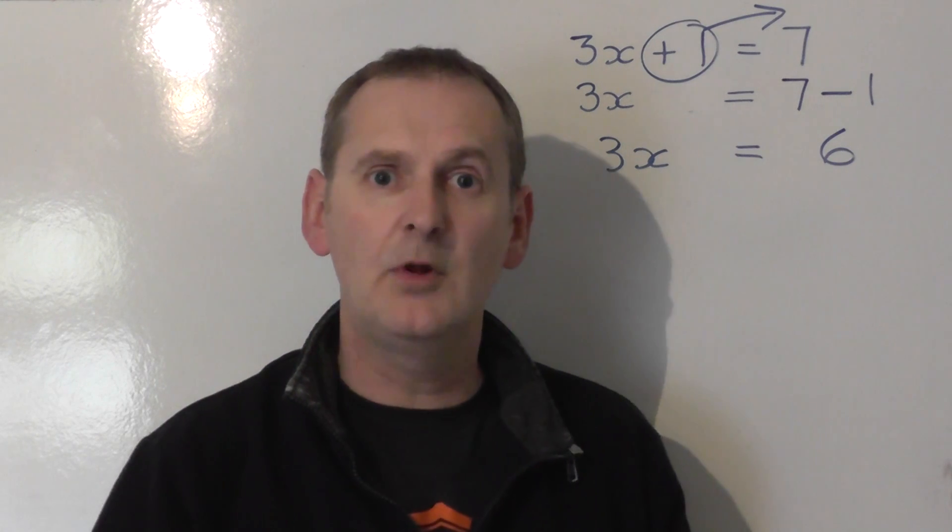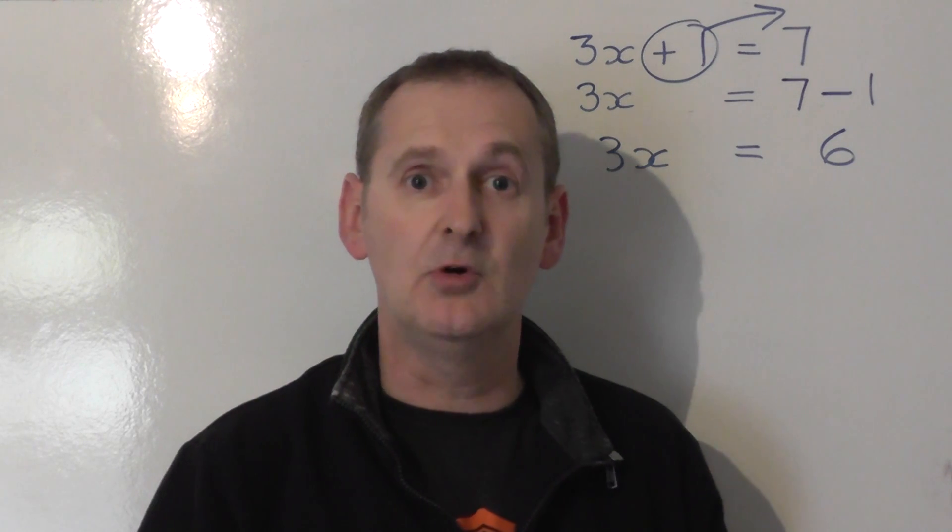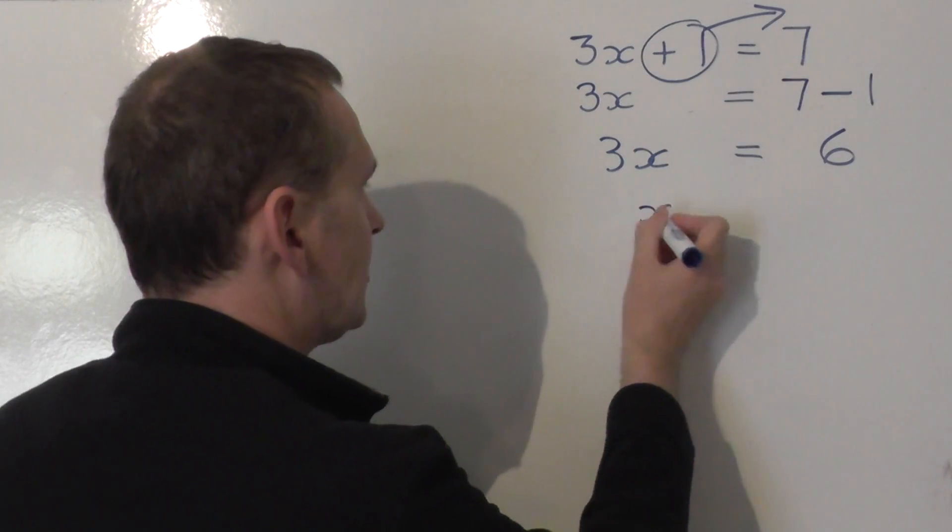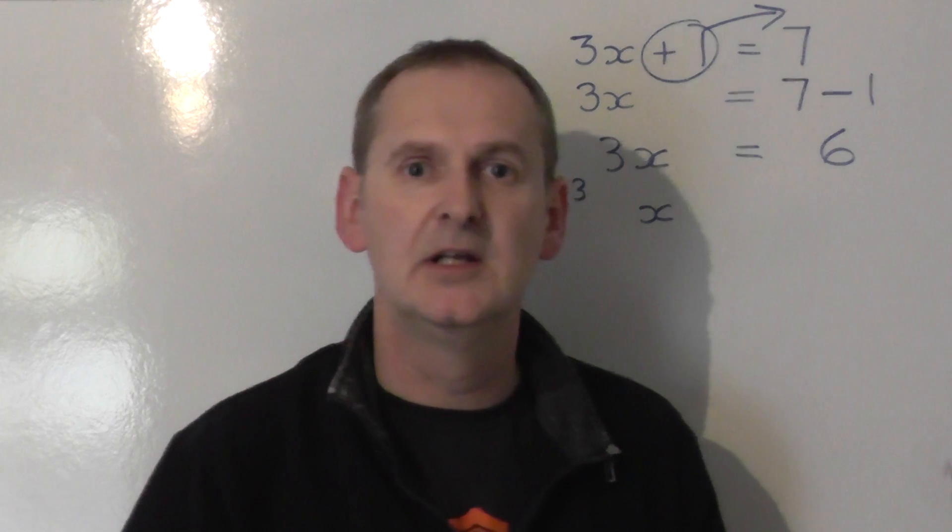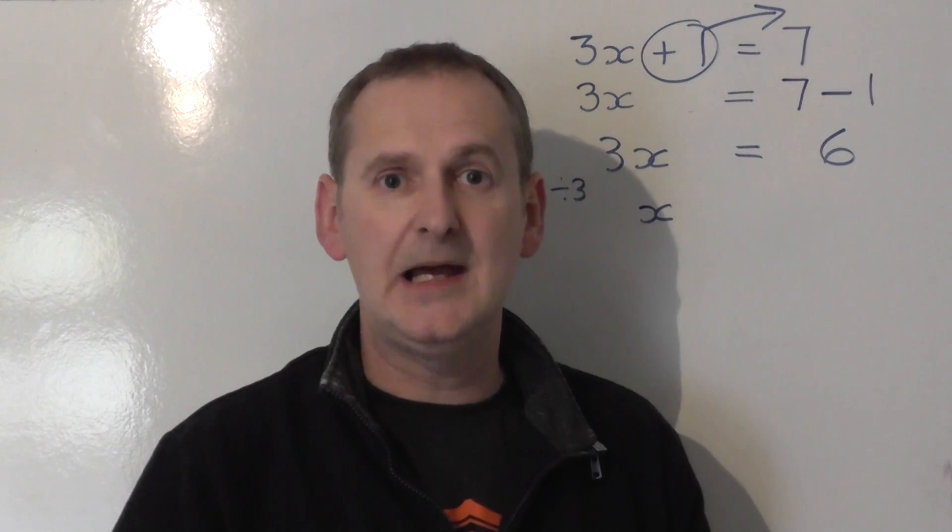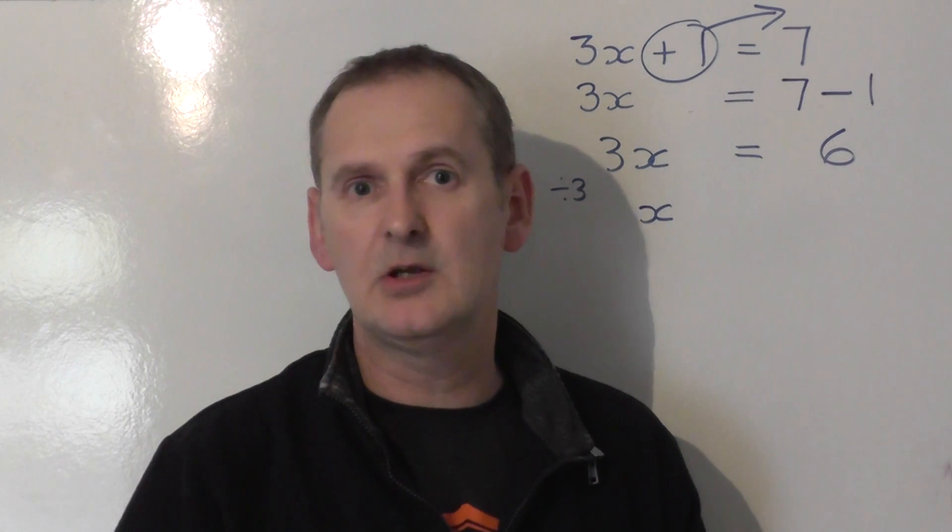Nearly there now, but I don't want 3x. I want to get just x or 1x. To go from 3x to get just an x or 1x, we simply share the left hand side by 3. But because we want to keep this balanced, we share both sides of the equation by 3.